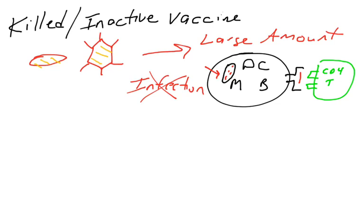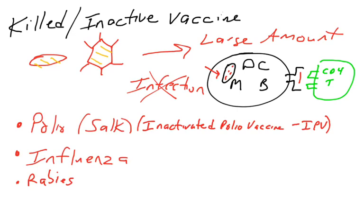You won't get a CD8 T cell response via immunization by killed or inactivated vaccines. But these work still pretty well. You're still going to develop B cells and antibodies, neutralizing antibodies, hopefully, and lifelong protection.